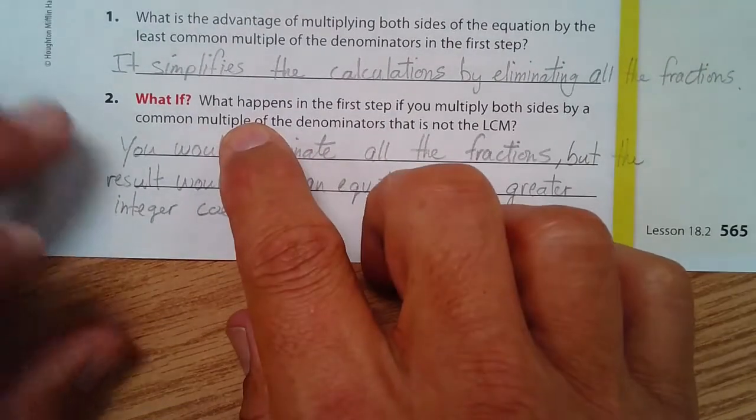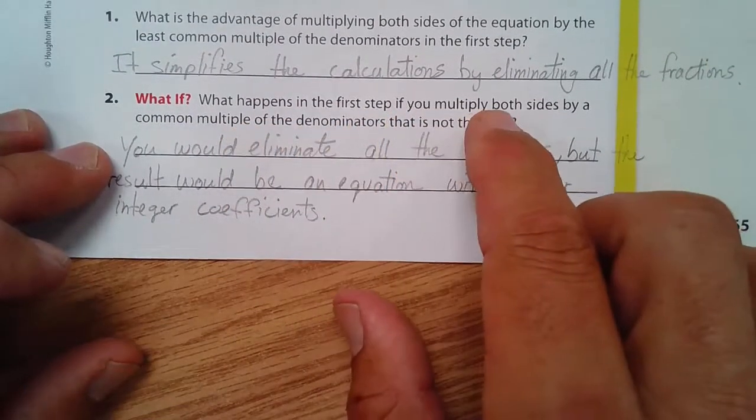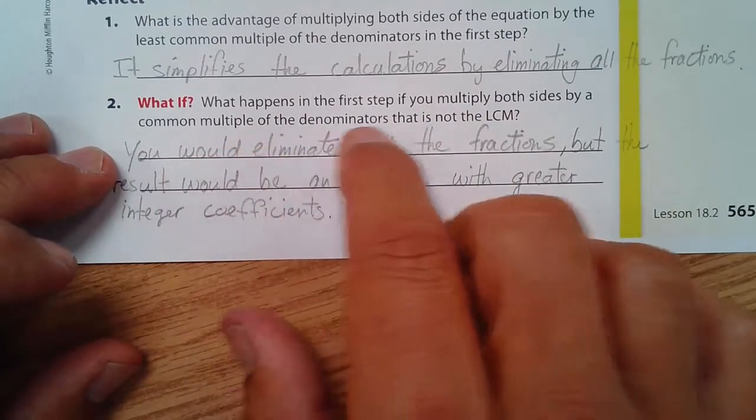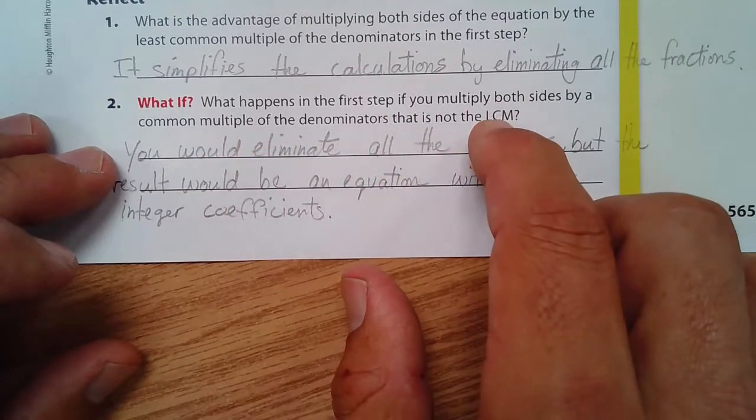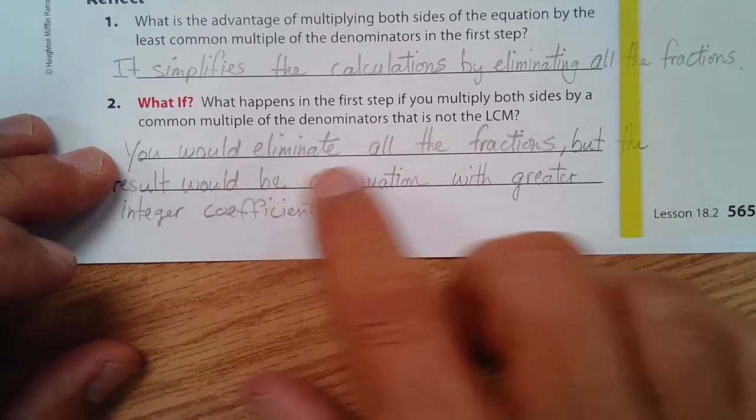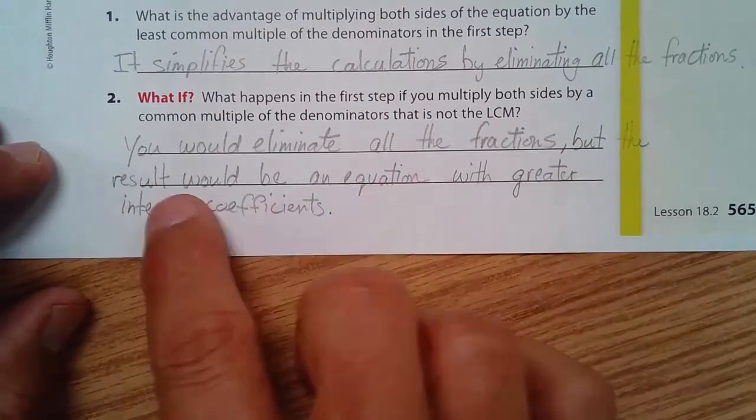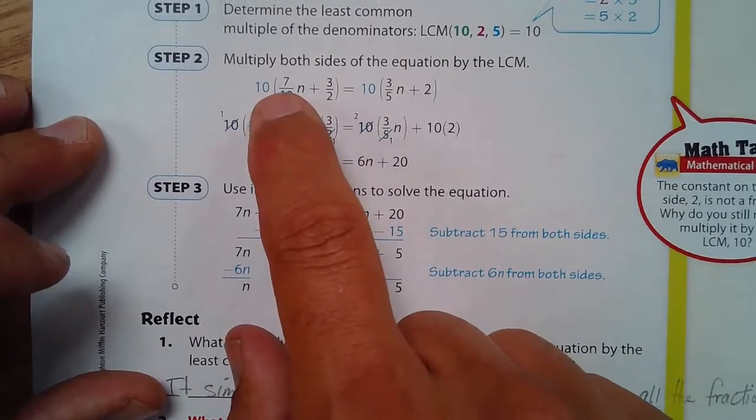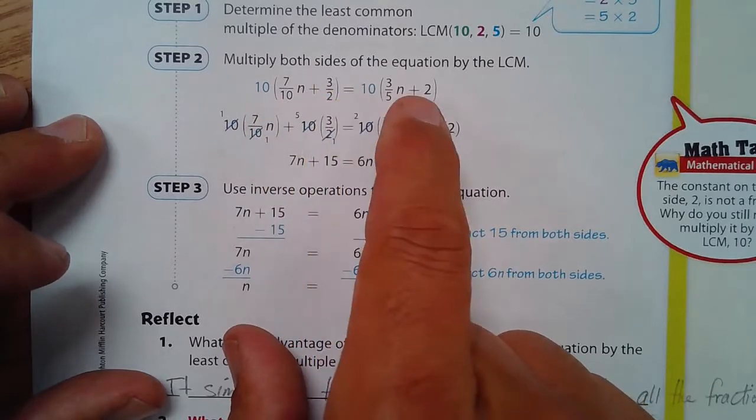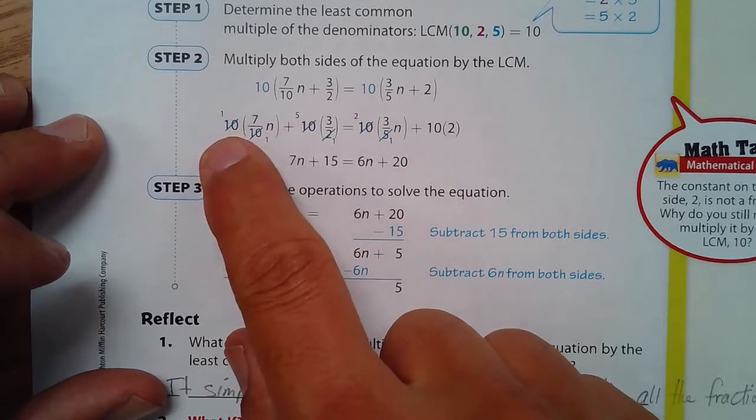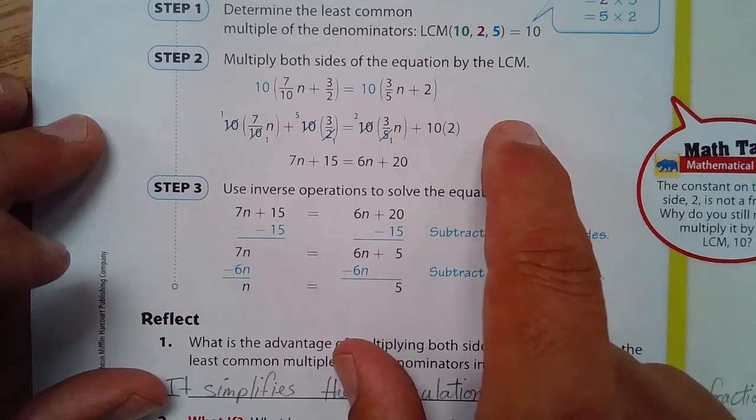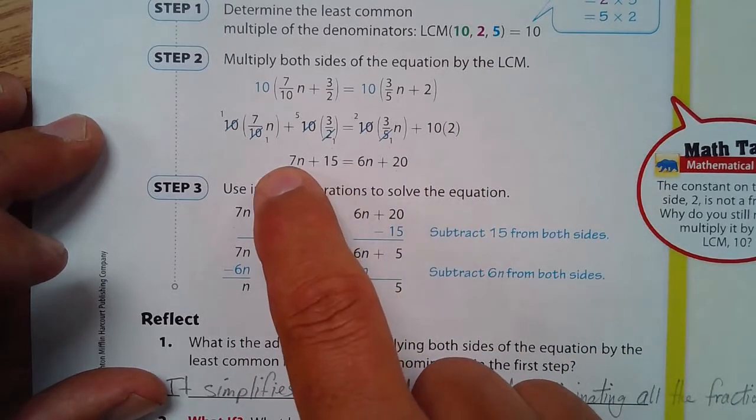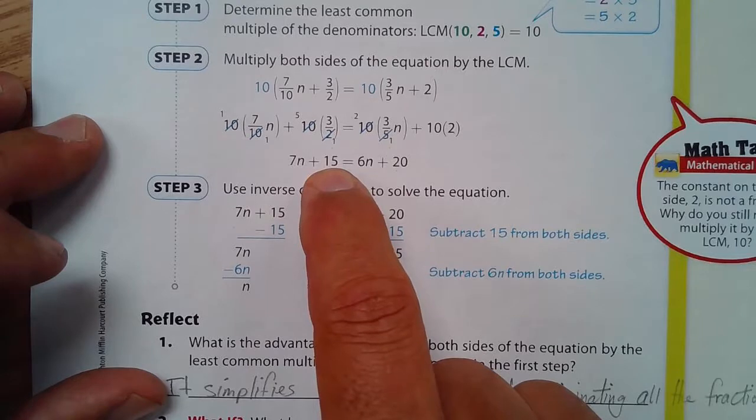What happens in the first step if you multiply both sides by a common multiple of the denominators and not the least common multiple? Well, you would eliminate all the fractions, but the result would be an equation with greater integer coefficients. So for example, 20 is a common multiple of all of these. So if I multiplied 20 by everything, I would end up with all the coefficients and constants that are larger.